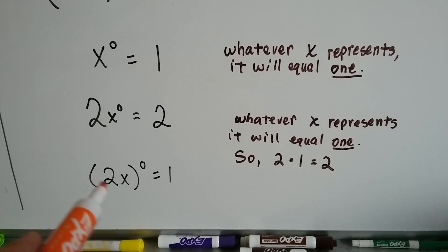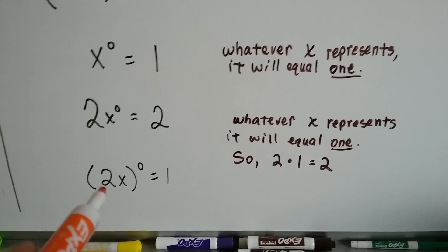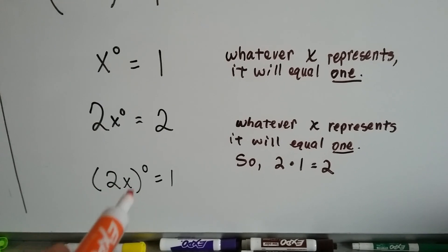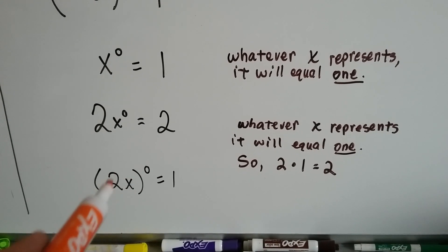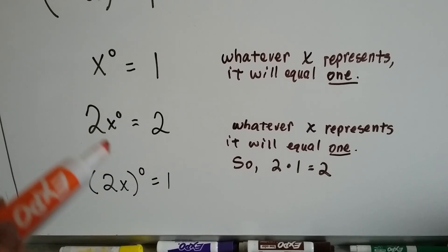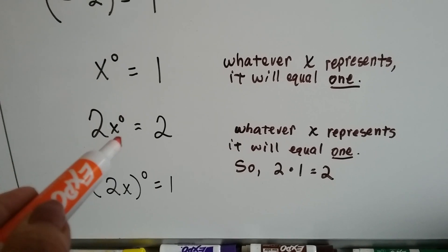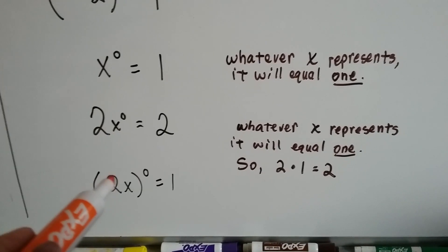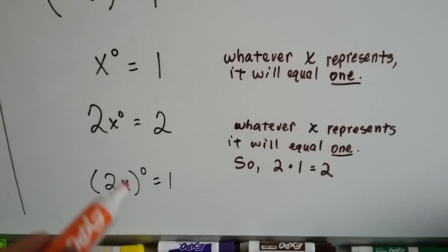But if it's in parentheses with this on the outside, then now this is the base number. So now the whole thing is going to equal 1. In this one, the x was the base number. In this one, the 2x is the base number. See the difference?